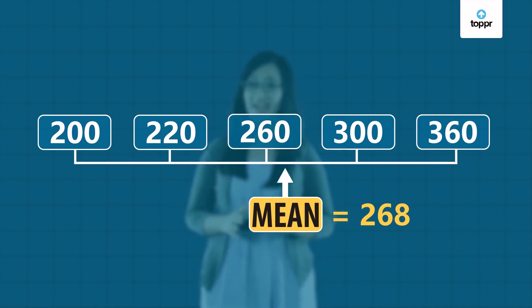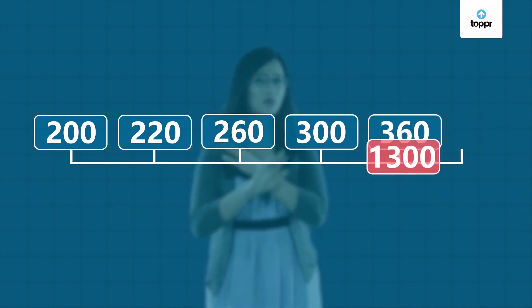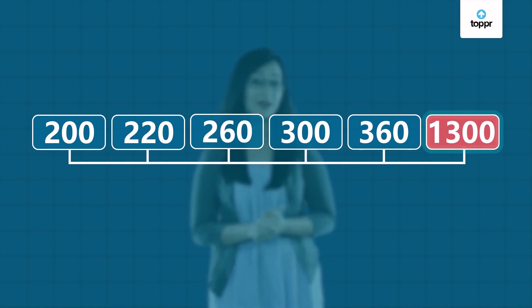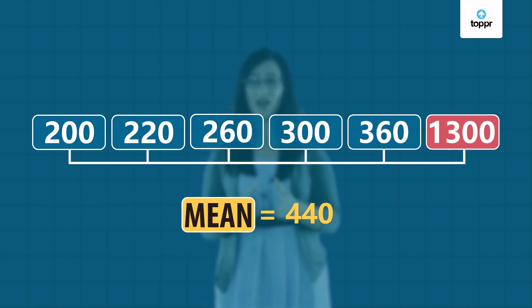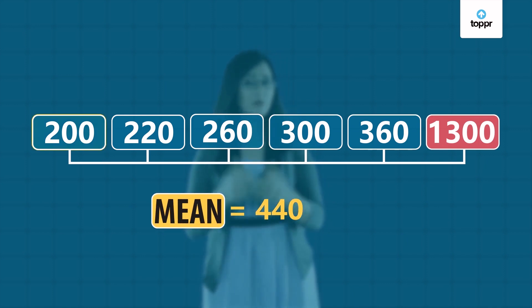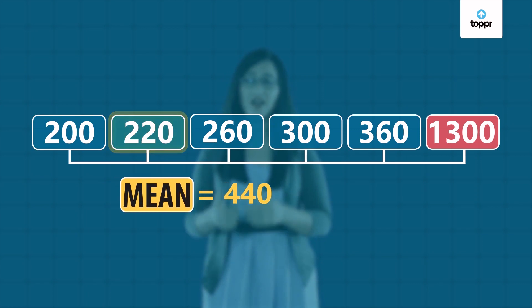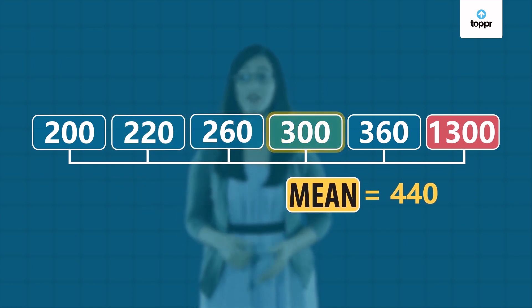But what if we added one more number that was very different from the remaining numbers? Just by adding one such number, the value of the mean changes completely. Now the new mean doesn't give us a good representation of all the values in the data set. Most of the values are much smaller than 440.